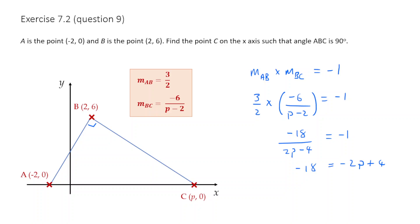So I multiply both sides by 2p minus 4. And if I resolve that, then 2p is going to equal to 22. I add 2p to both sides and I add 18 to both sides. And then dividing by 2, p is equal to 11.